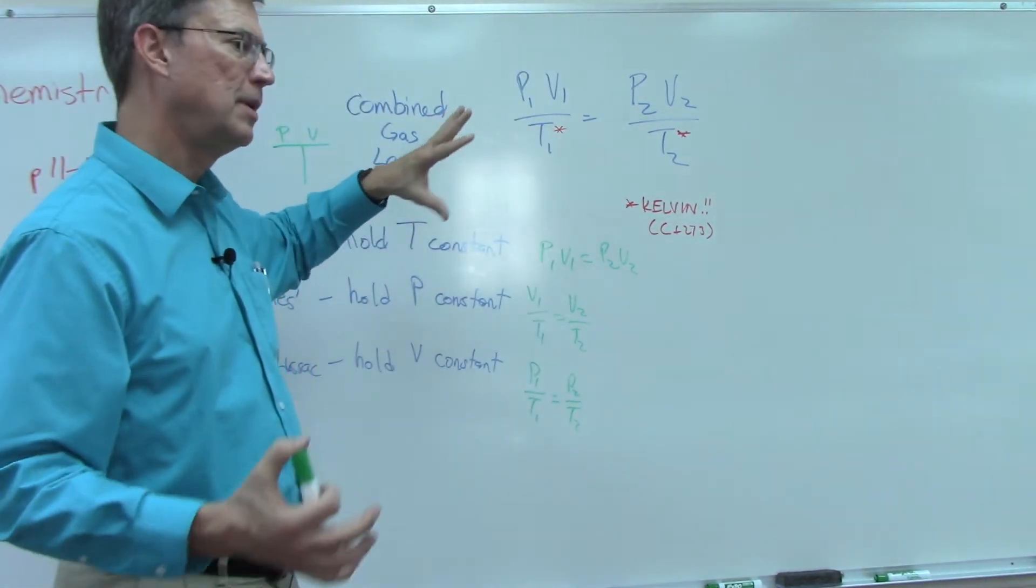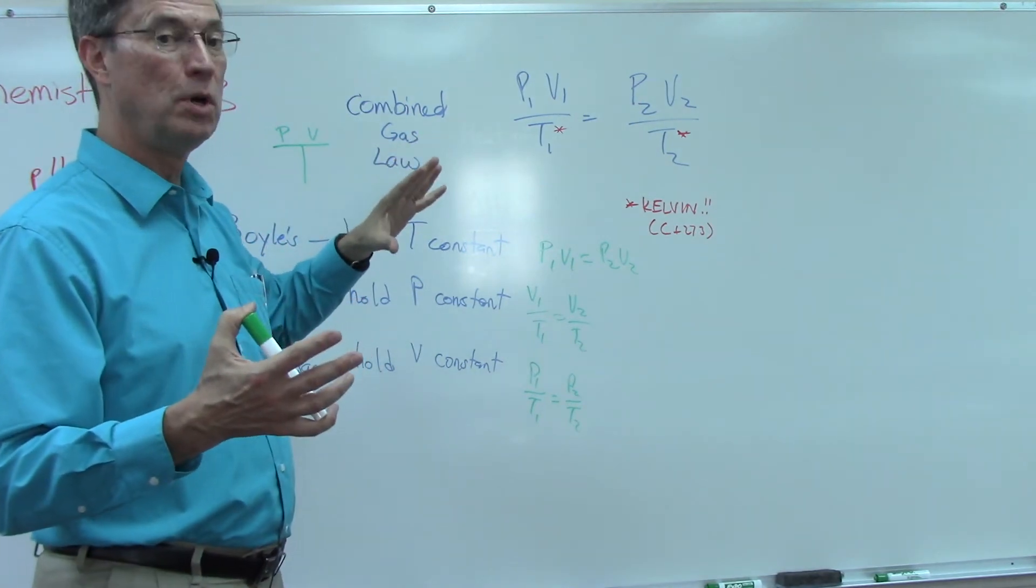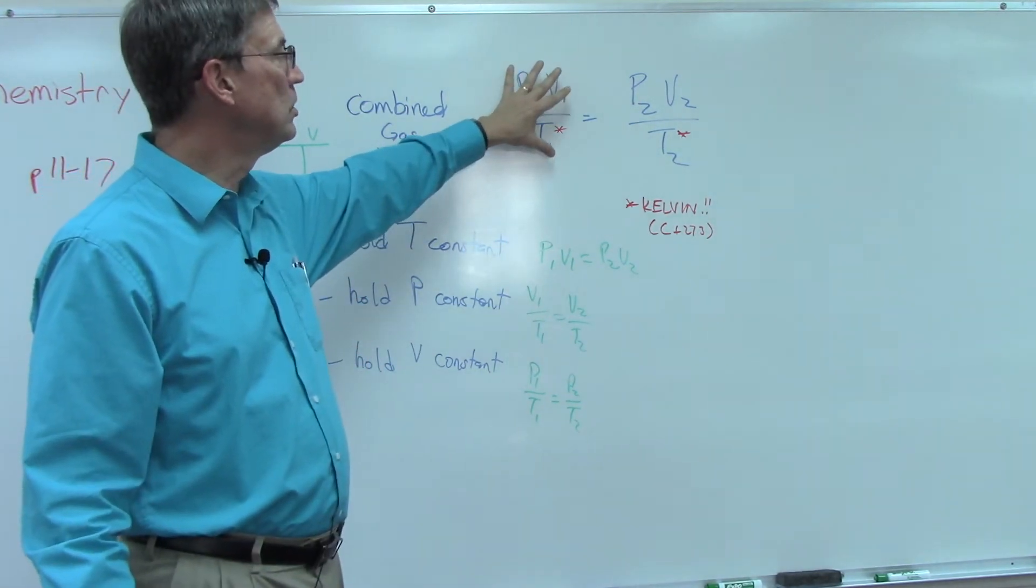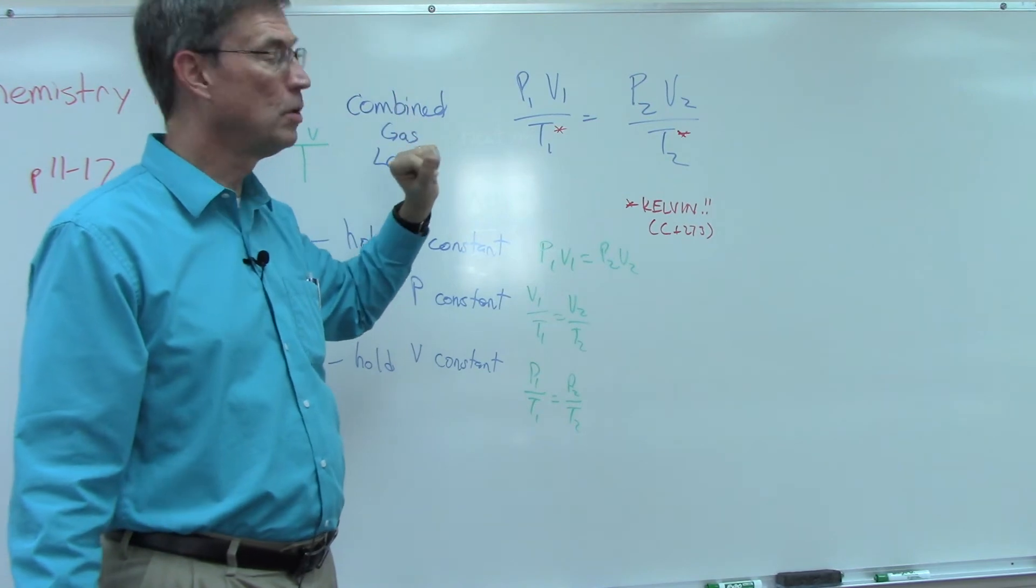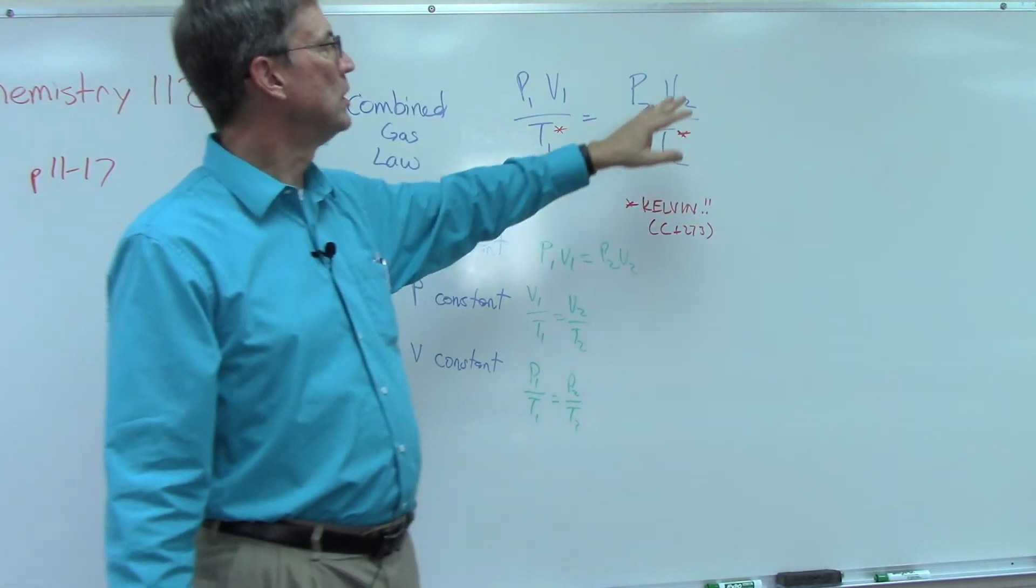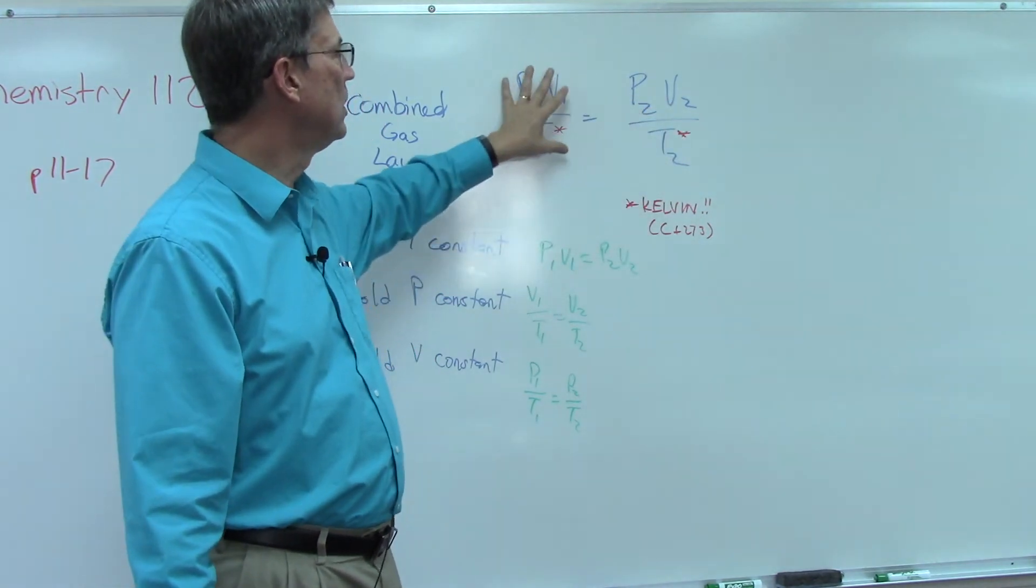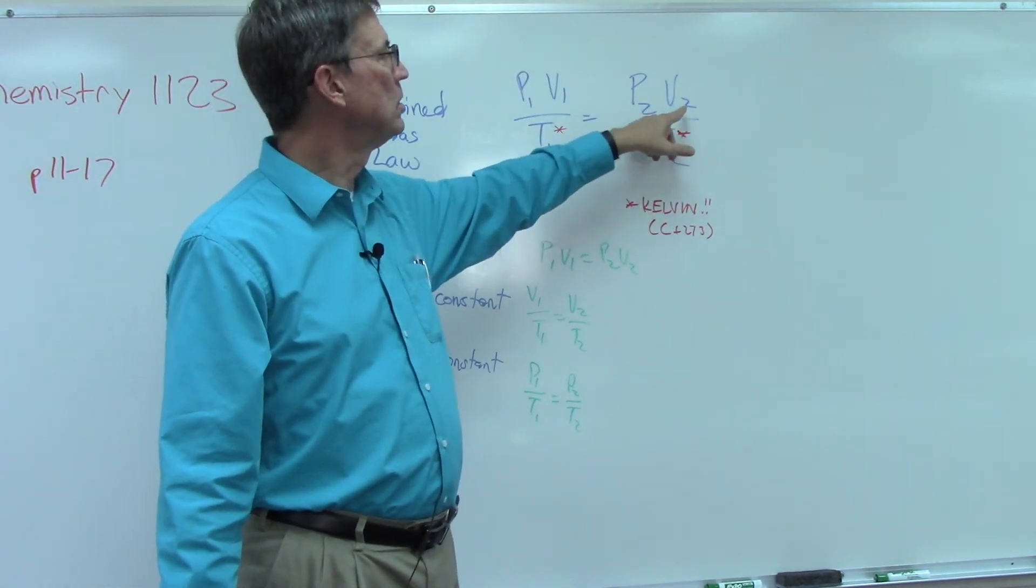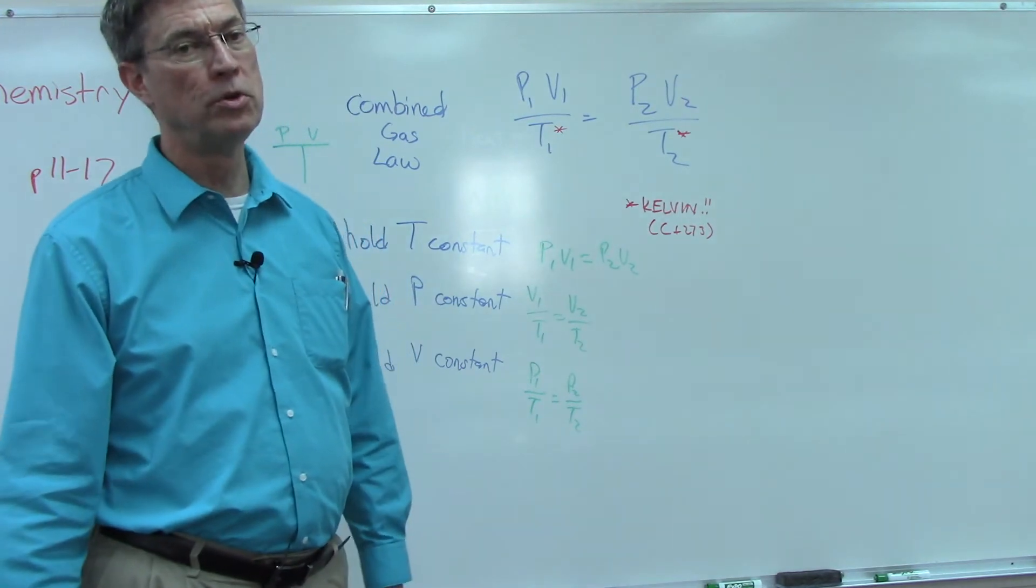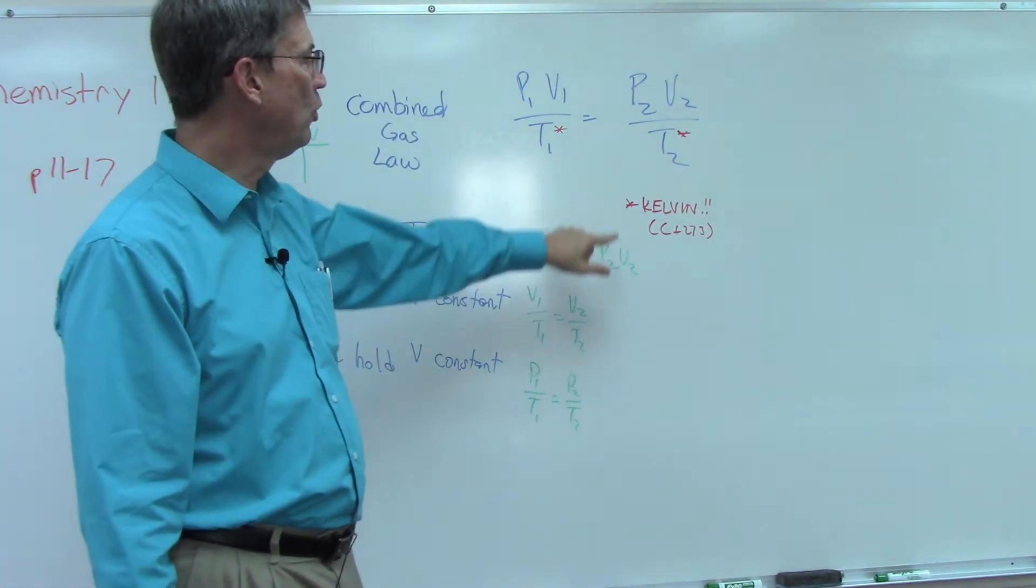The ones and the twos mean one is the initial - so the experiment starts under these conditions. Something changes, maybe the pressure changes or the temperature changes, and you're saying how does that affect the volume. So you start here, you make some changes, you can measure what the third quantity would be.